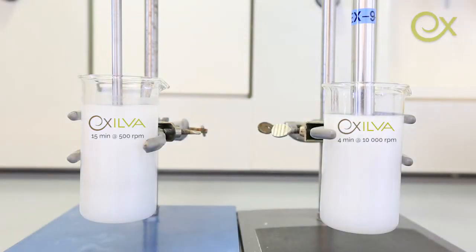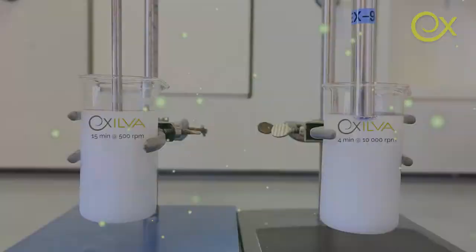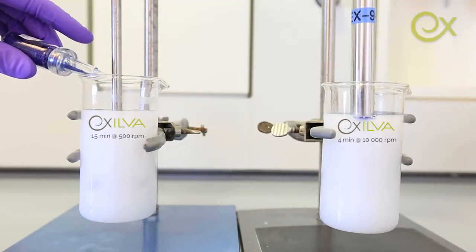In this test, the low shear stirrer is running for 15 minutes at 500 RPM, while the high shear stirrer is running for 4 minutes at 10,000 RPM. The dispersion on the left visually looks good.